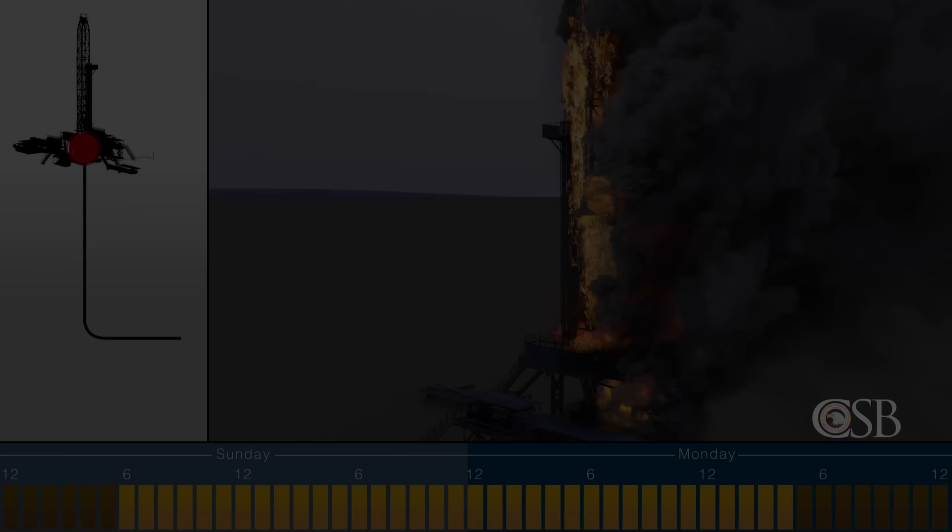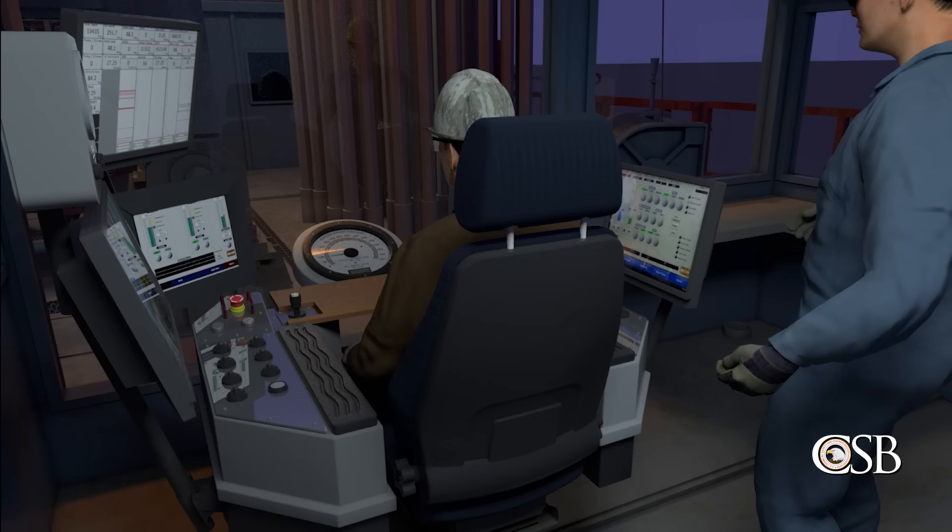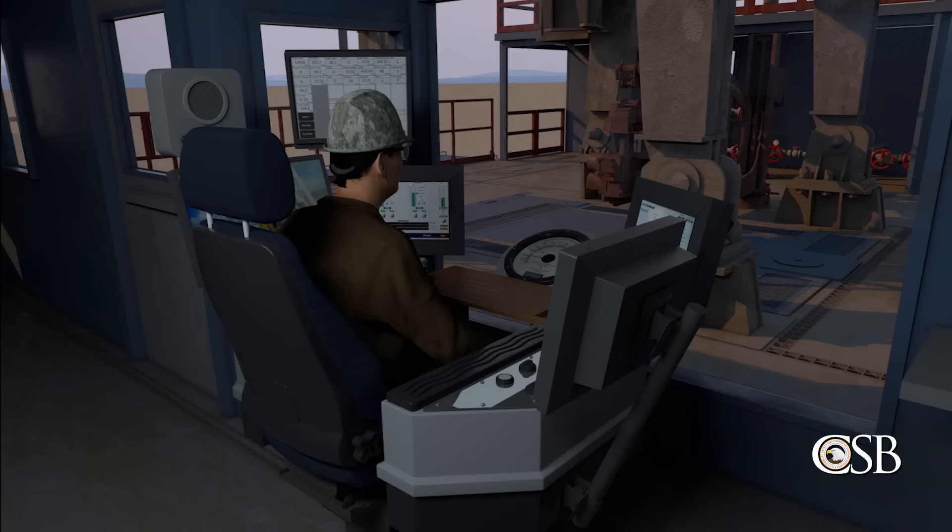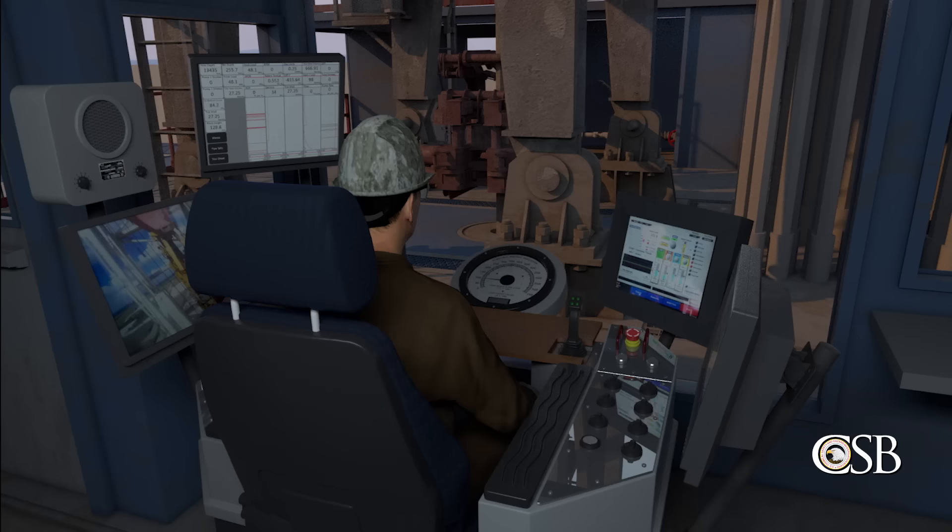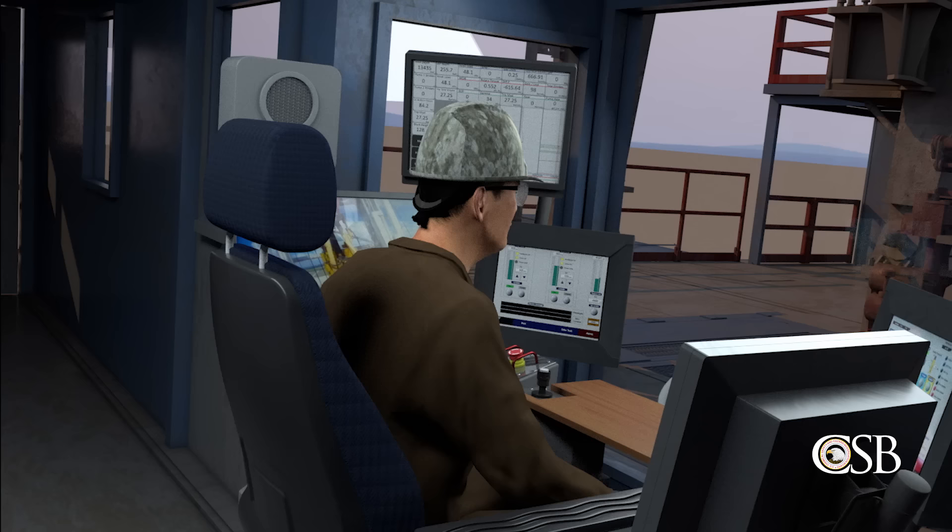During its investigation, the CSB found data indicating that on the evening prior to the blowout, the night shift driller turned off the entire alarm system. Data also indicates that the day shift driller briefly turned on the alarm system but then quickly turned it off again on the day of the incident. Other than that short period, the alarm system was off for 14 hours leading to the blowout. We were not able to conclusively determine why the drillers turned the alarm system off. A possible reason why they did is that the alarms were perceived as a nuisance or an annoyance. In fact, we found that had the alarm system been on, most of the alarms that would have activated during the 14 hours leading up to the incident likely would have been irrelevant to detecting the problems in the well.